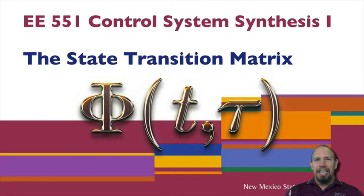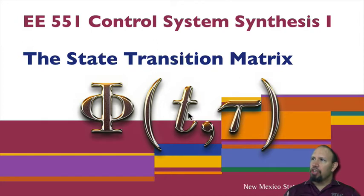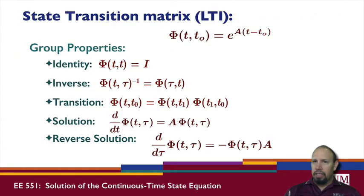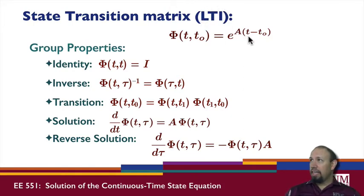Now we're going to talk about the state transition matrix. We talked about the state transition matrix for the discrete-time system. For the continuous-time system we have a similar form, but instead of integers for our time variables we now have continuous time variables. The state transition matrix Φ(t, t₀) is equal to e^(A(t - t₀)) if we have a linear time-invariant system. In that case we have an explicit formula for the state transition matrix.